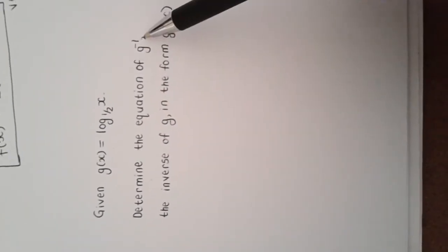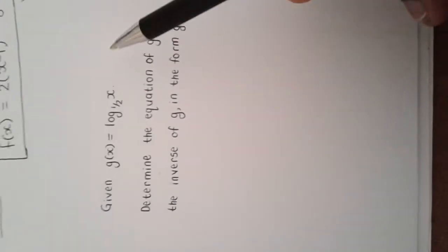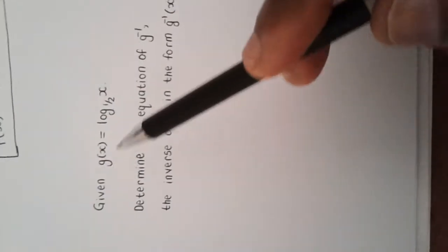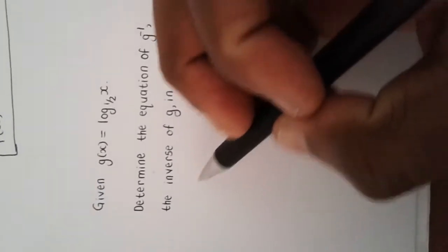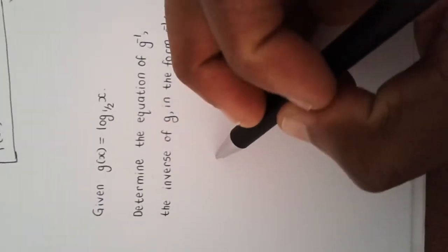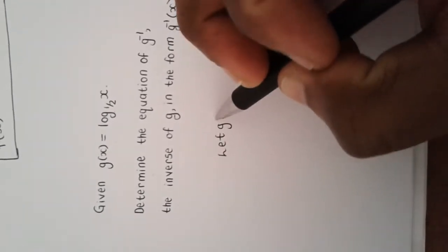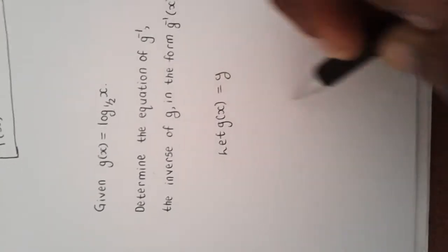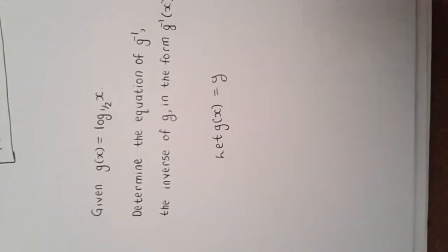So let's find the equation of g inverse. Remember that with inverses you have to swap your x and y values around and then solve for y. To make things easy, let's start by letting g(x) equal y, so that we can clearly see the x and y we are going to be swapping.